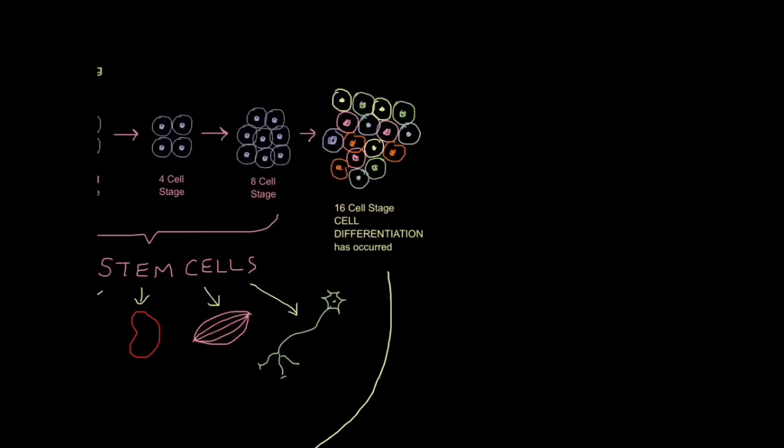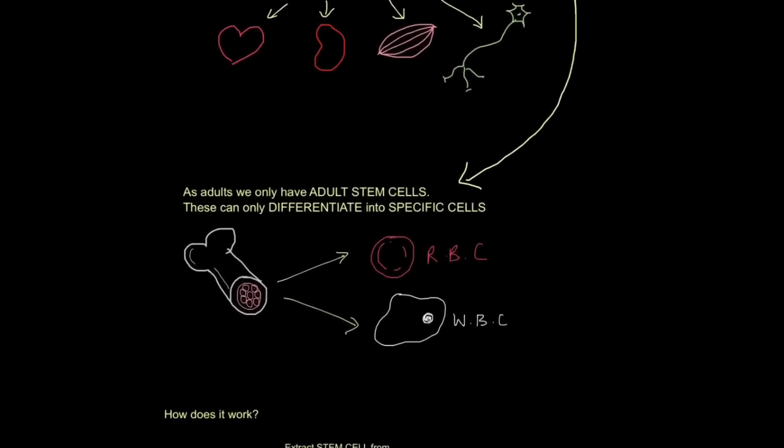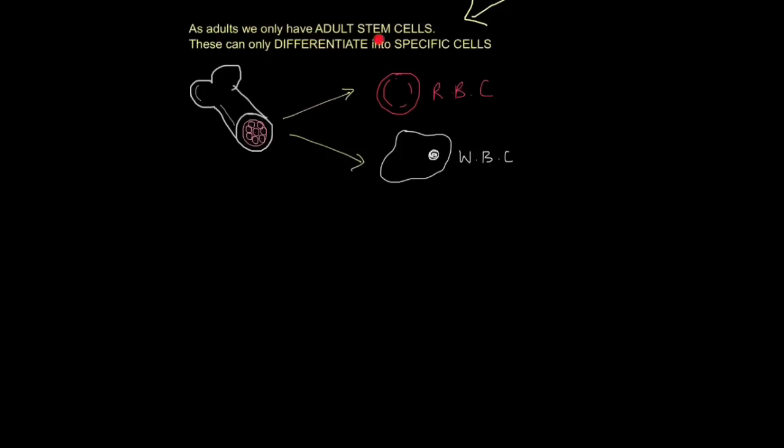When we become adults, we only have adult stem cells. These can only differentiate into specific cells, not any type of cell. So for example, our bone marrow can differentiate into red blood cells and white blood cells, but not muscle cells, not heart cells and so on. I mean, this is obviously very important. I don't want to trivialize it. For example, if you cut yourself, you'll notice you heal. Where do these new cells come from? Well, they come from your adult stem cells.